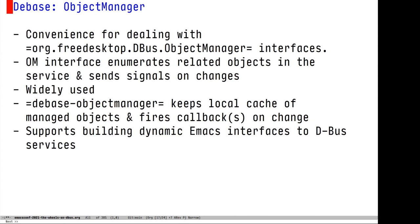dbase also comes with dbase-object-manager, which is convenience for the D-Bus object manager interface. This is used in a lot of places in D-Bus where an object manages other objects. For example, the network manager object manages network hardware objects, and using the object manager interface you can enumerate all of the network hardware, and by subscribing to the signals you can be notified when they change. dbase-object-manager keeps a local cache and will fire a callback on any change — so it's the building block for that dynamic user interface, but inside of Emacs.